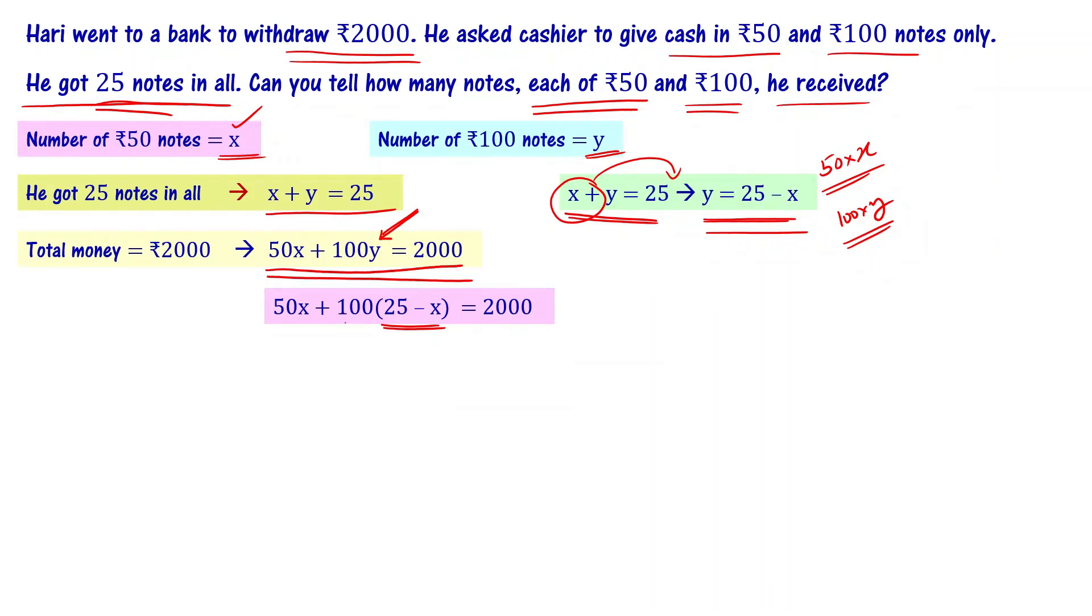I can write this as 50x plus 2500 minus 100x equal to 2000. This can be now written as 2500 minus 50x equal to 2000.